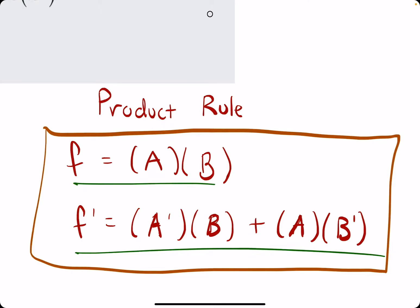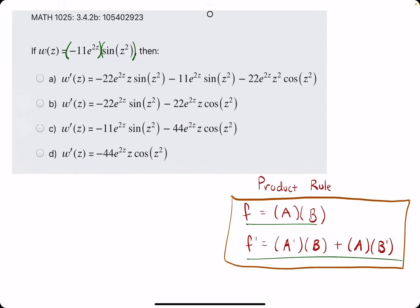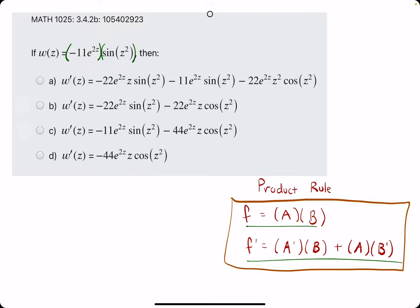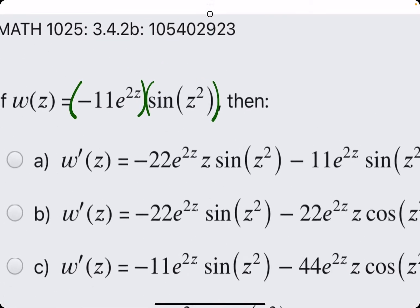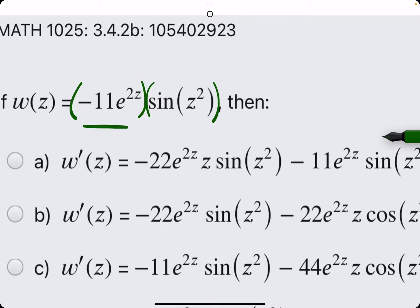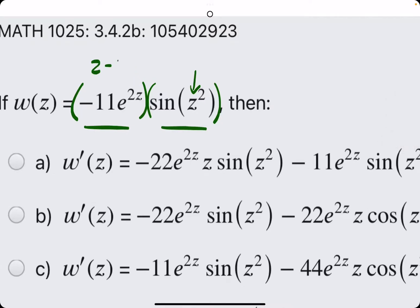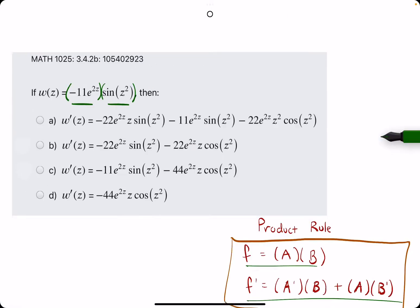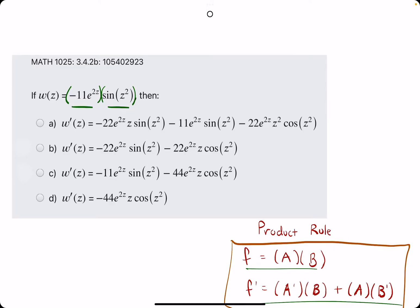Feel free to take a picture, a screenshot of this right now. This is the product rule that we will be using to find the derivative of this. The product rule is used when we are finding the derivative of functions that have two expressions that both have the variable and they are being multiplied together. Another word for the product rule would be the multiplication rule.